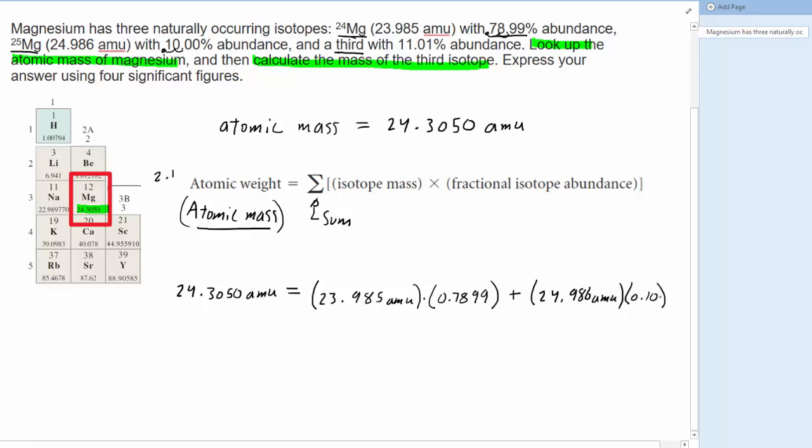And finally, continuing on in the formula, we'll have to put another plus sign in here, and we'll also have to come down here. Now, the mass of the third isotope is exactly what we're looking for, so we don't know that, and therefore we should call that x. Also, to get the fractional abundance, we have to remember that all three isotopes should add up to 100%.